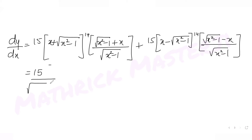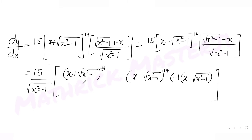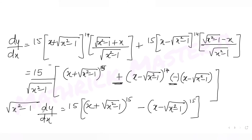Taking 15 and 1/√(x²-1) common, and factoring out a minus sign from the second term, we get: √(x²-1)·dy/dx = 15·[(x + √(x²-1))^15 - (x - √(x²-1))^15]. This is our first derivative in simplified form.